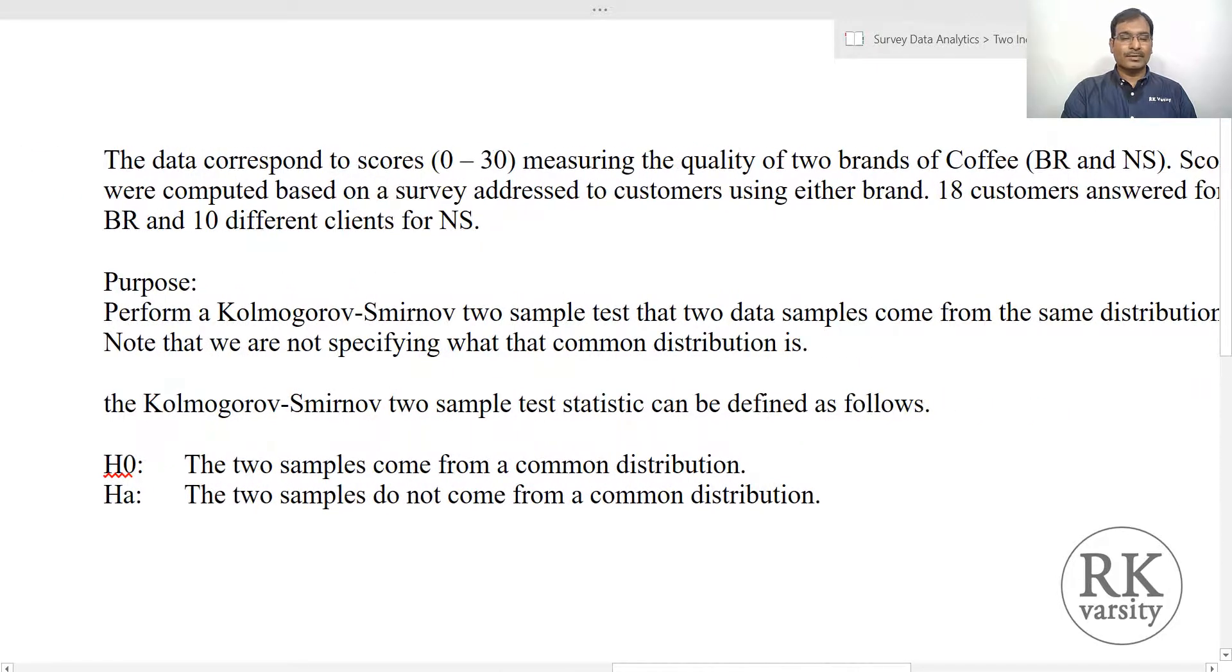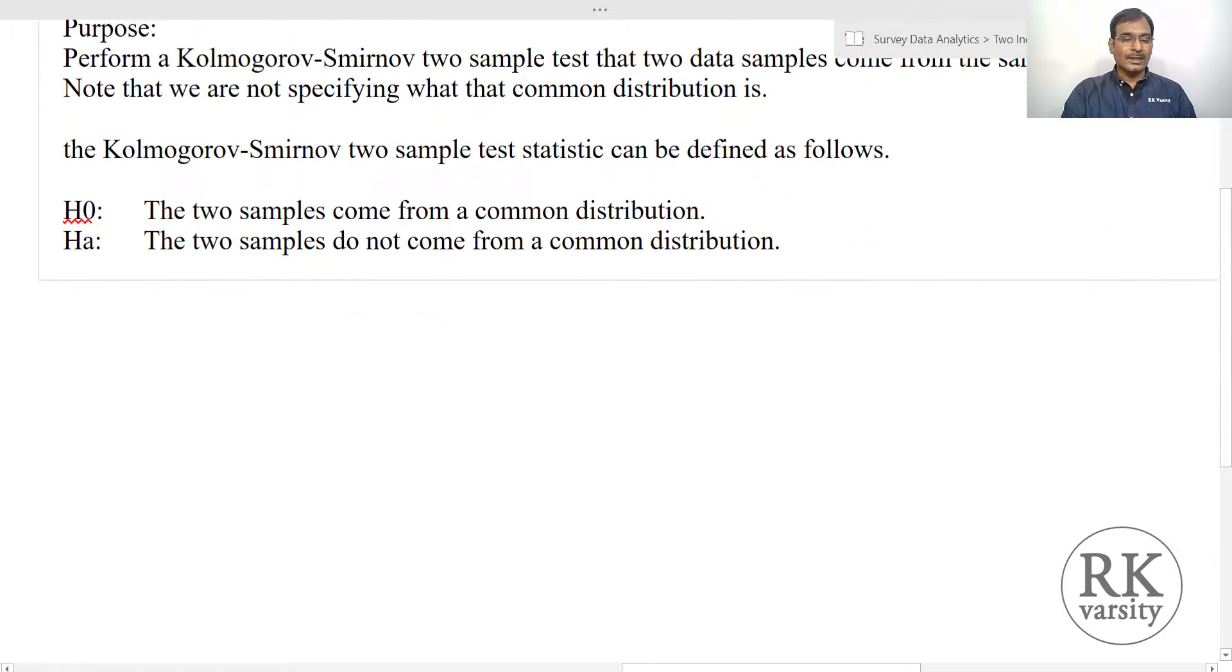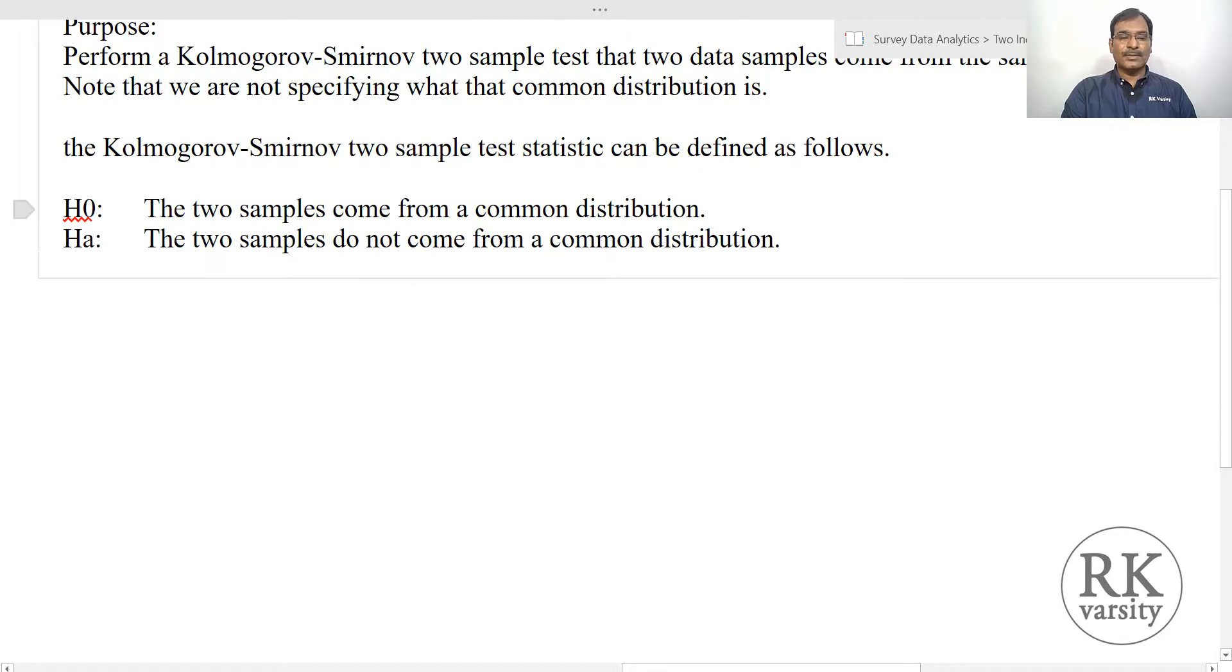Now we go to the next example. Here is an example. The data correspond to scores of 0 to 30 measuring the quality of two brands of coffee—Brand 1 is BR and Brand 2 is NS. Scores were computed based on a survey addressed to customers using either brand. 18 customers answered for BR and 10 different clients for NS. You need to perform the Kolmogorov-Smirnov two-sample test to check whether the samples come from the same distribution or not. The hypothesis is that the two samples come from a common distribution, and the alternative hypothesis is that the two samples do not come from a common distribution.